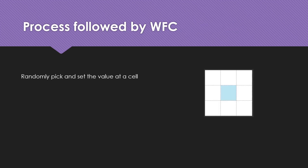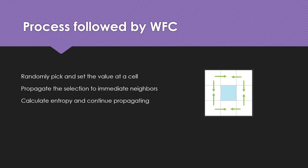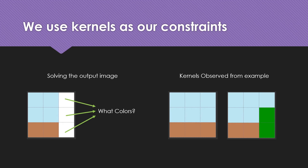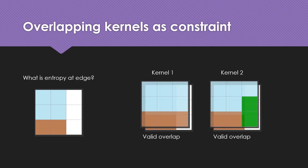The WFC process starts by picking a random location in the output and setting the value at a cell. After setting that value, we propagate the selection to immediate neighbors. These neighbors calculate their own entropy and continue propagating this information. To solve the output image, we require constraints which come from kernels observed from the example image. We use the kernel as constraints by overlapping the kernel in the output region to check if the overlap was valid.